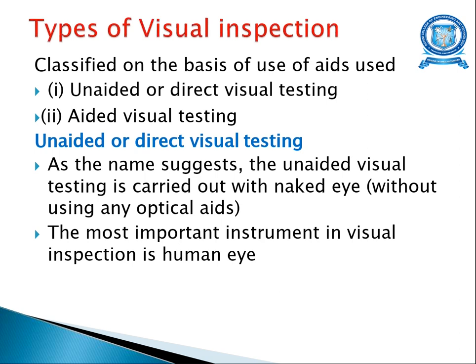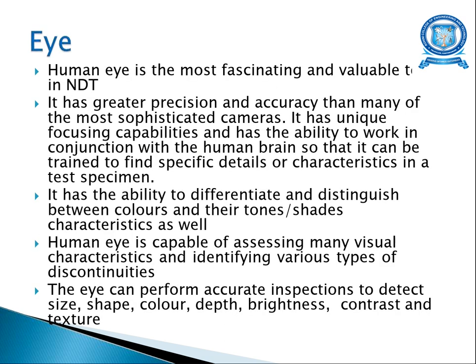Unaided visual testing is carried out with the naked eye without any optical aids. The main instrument is the human eye, which is the most valuable and fascinating tool in NDT because of its greater precision and accuracy. Like many sophisticated cameras, it has focusing capability to work in conjunction with the human brain. It also has the ability to differentiate and distinguish between colors, tones, shades, and characteristics, and the capability of assessing many visual characteristics and identifying various types of discontinuities.